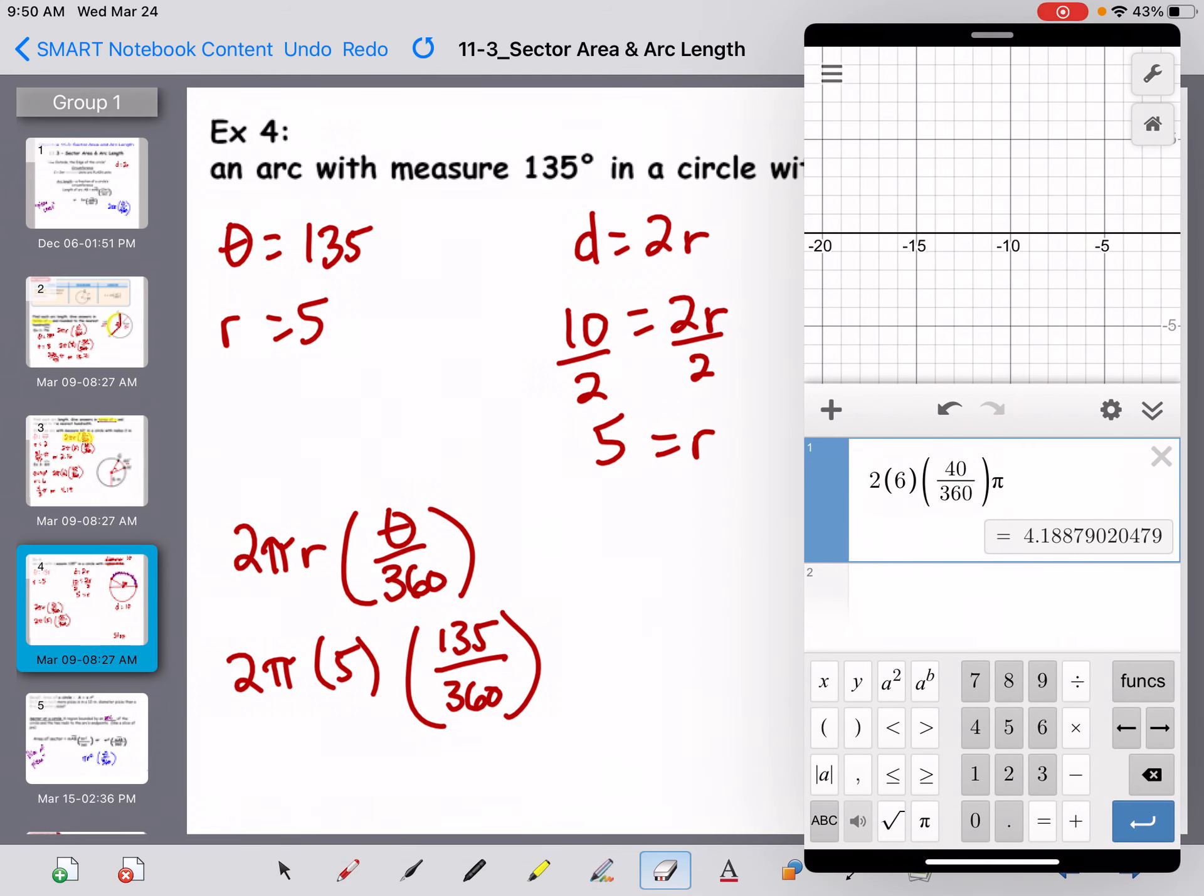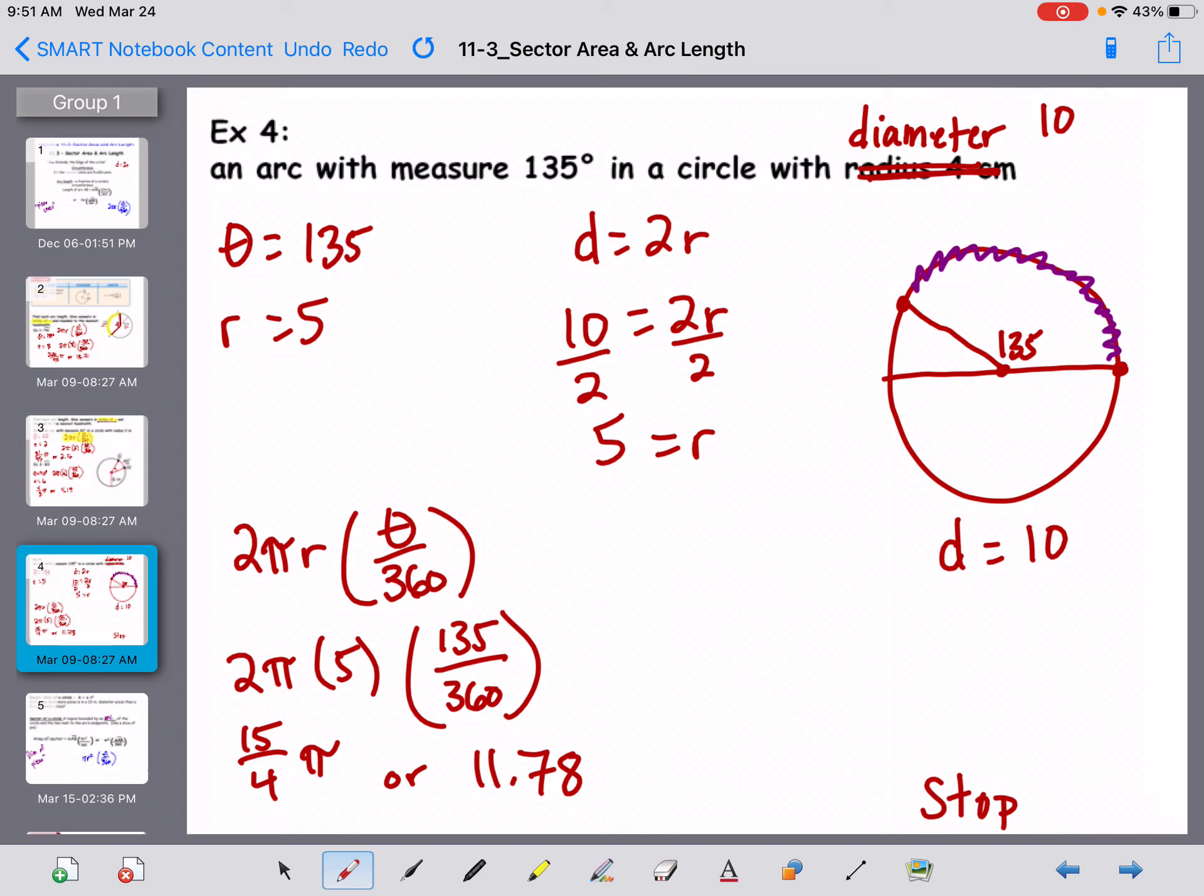Go to the calculator, take out the pi, change 40 to 135 and the 6 will become a 5. I'm getting 15 over 4 pi. Now I want to write it as a hundredth. I put the pi back in and I get 11.78.